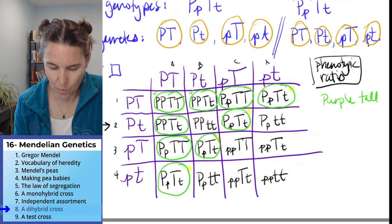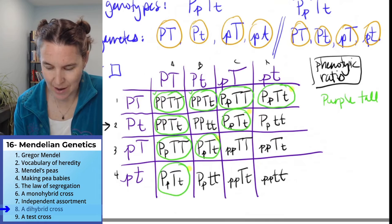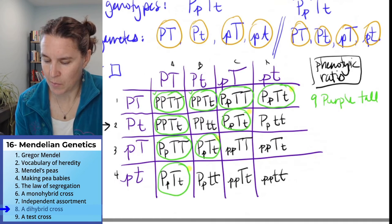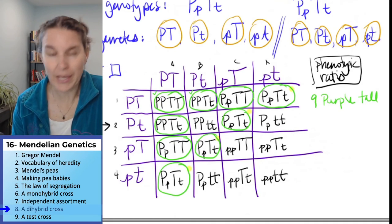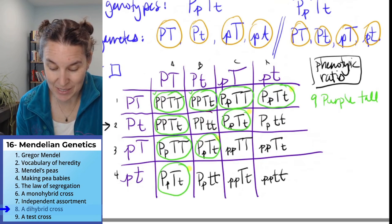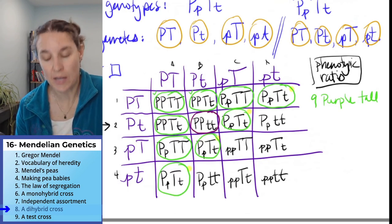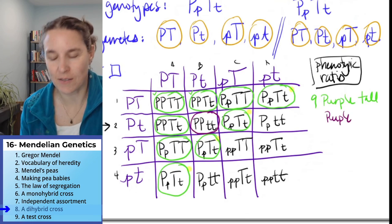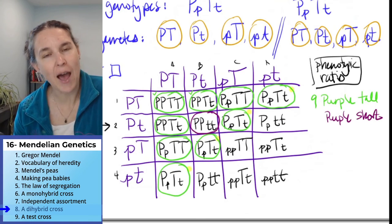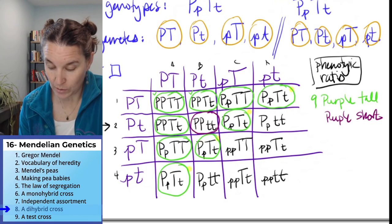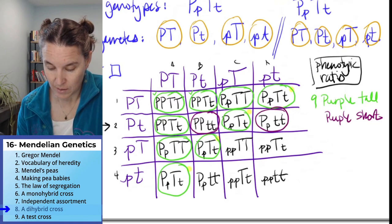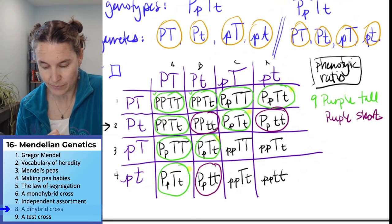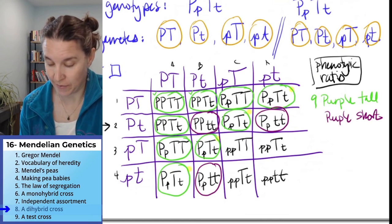Shall we count them? How many purple talls do we have? One, two, three, four, five, six, seven, eight, nine. Nine purple tall guys. Pick a different one. I'm going to pick a different color. And I'm going to say this guy is the next genotype we're looking for. That one is purple what? Short. How many purple shorts are there? How many purple shorts do we have? Three.